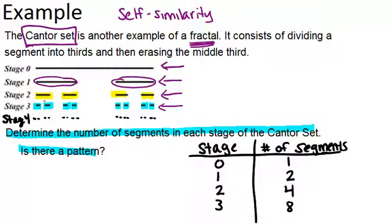For each original segment, there are now two. So in this case, there's going to be 2, 4, 6, 8, 10, 12, 14, 16. So in stage 4, there are 16.